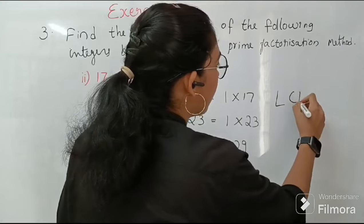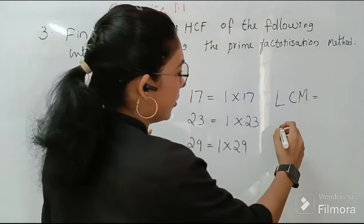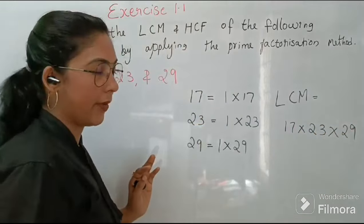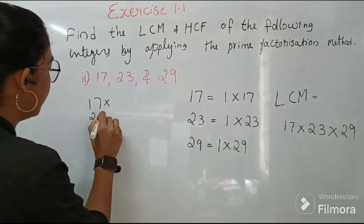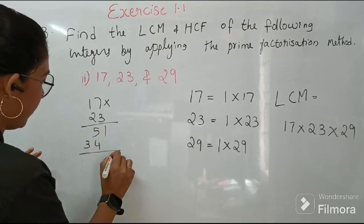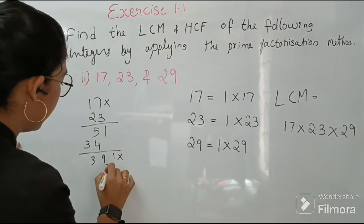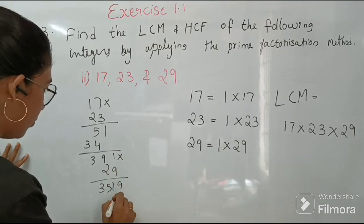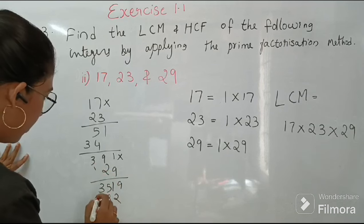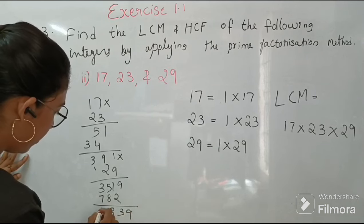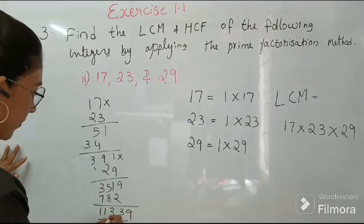And now what is LCM? LCM is equal to 17 into 23 into 29. So 17 into 23 is equal to 391. Then into 29. LCM is 11,339.